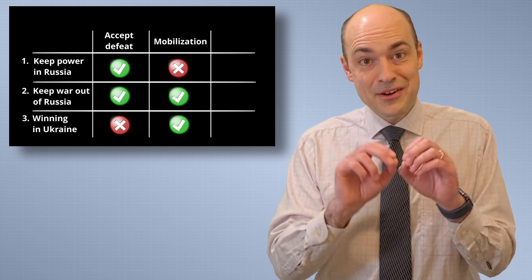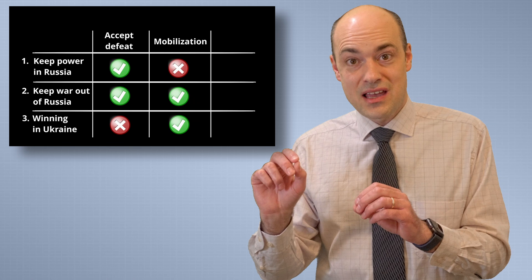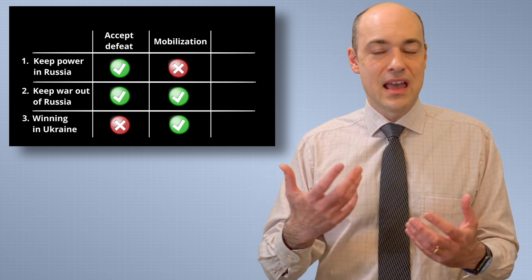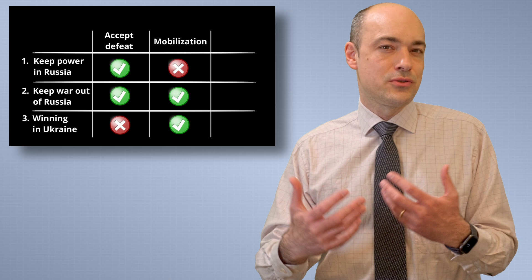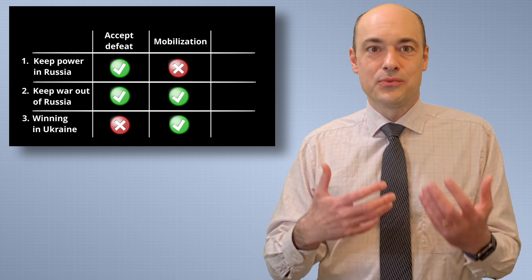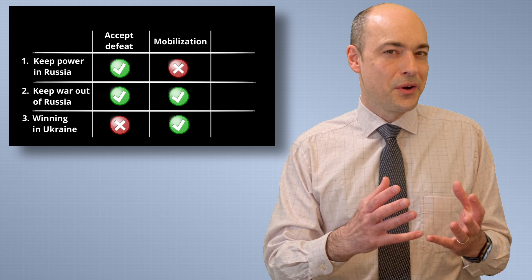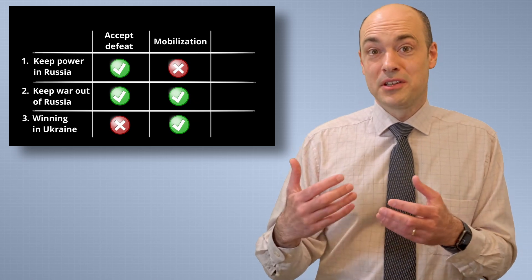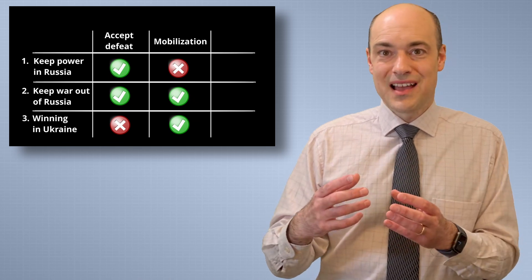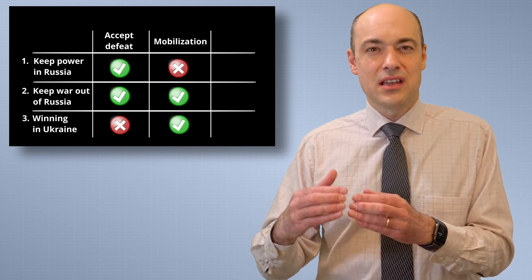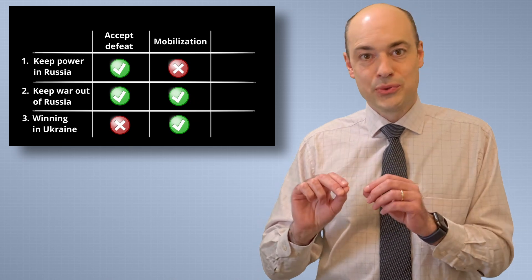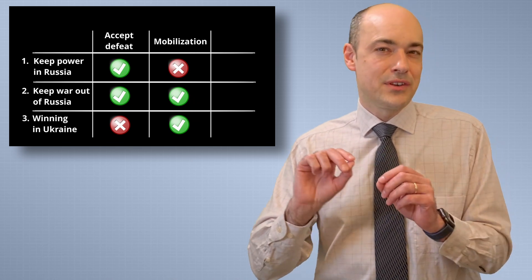So if Putin declares mobilization of the Russian society, then he might lose the loyalty of the security apparatus and he might lose the ability to control the narrative in society. So not only is he in risk of losing the public support for the war, but ultimately he can lose public support for his own leadership of Russia. And for that reason, general mobilization can compromise the one thing that is priority number one for Putin, which is the stability of his own regime.